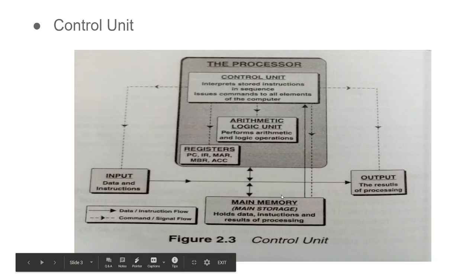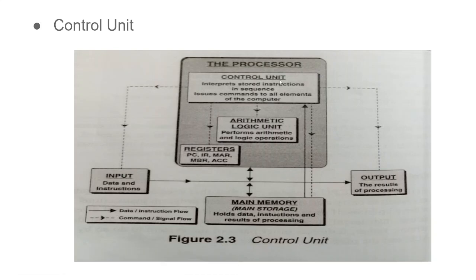Command and signal flow originates from the control unit. It controls registers and the arithmetic and logic unit, and instructs memory whether to store, delete, or display information. It then signals the input device to send data through main memory or to the CPU. After processing, it instructs the output device to display the information to the user. This is how dotted lines and arrows in the diagram show control unit operation.